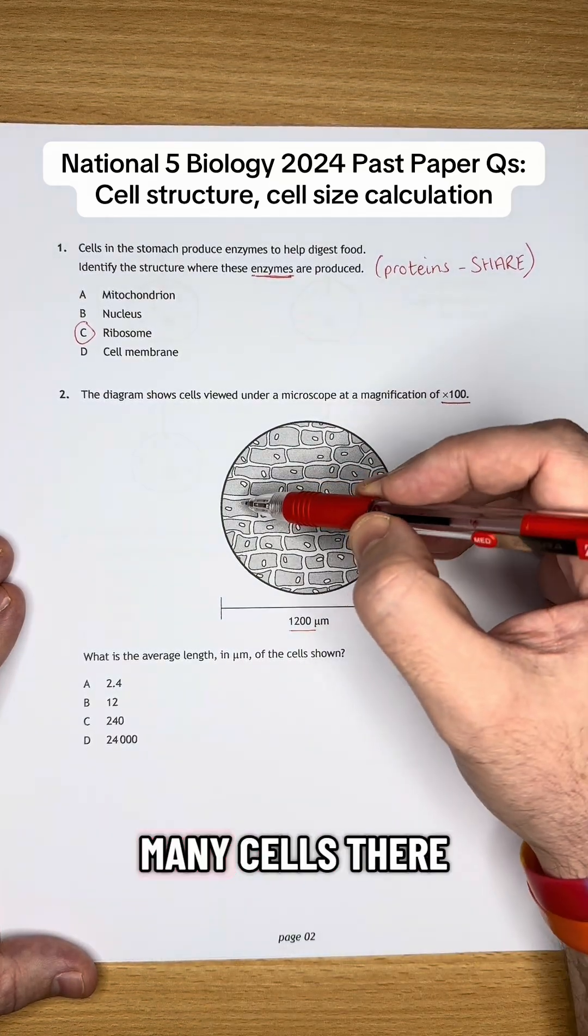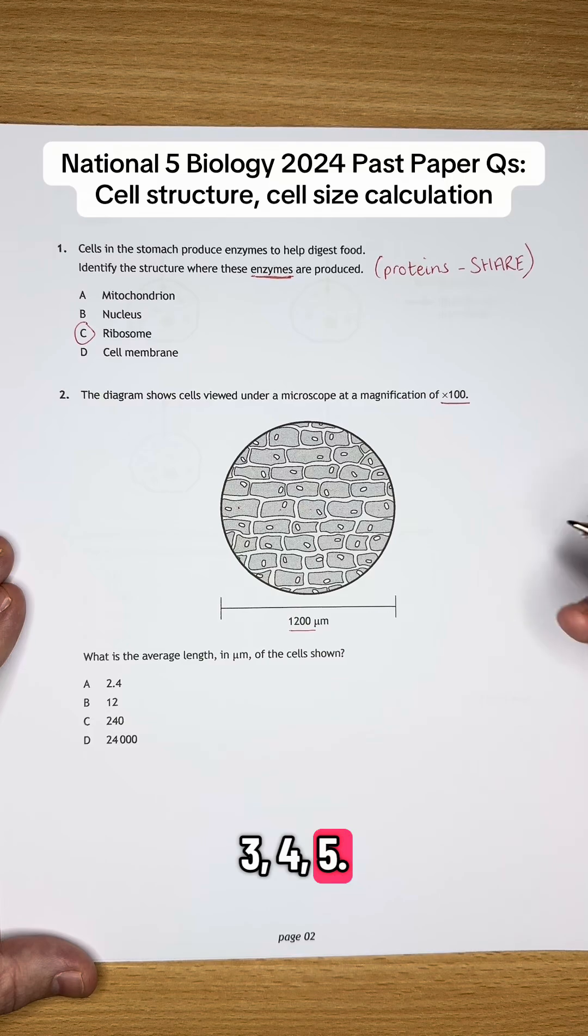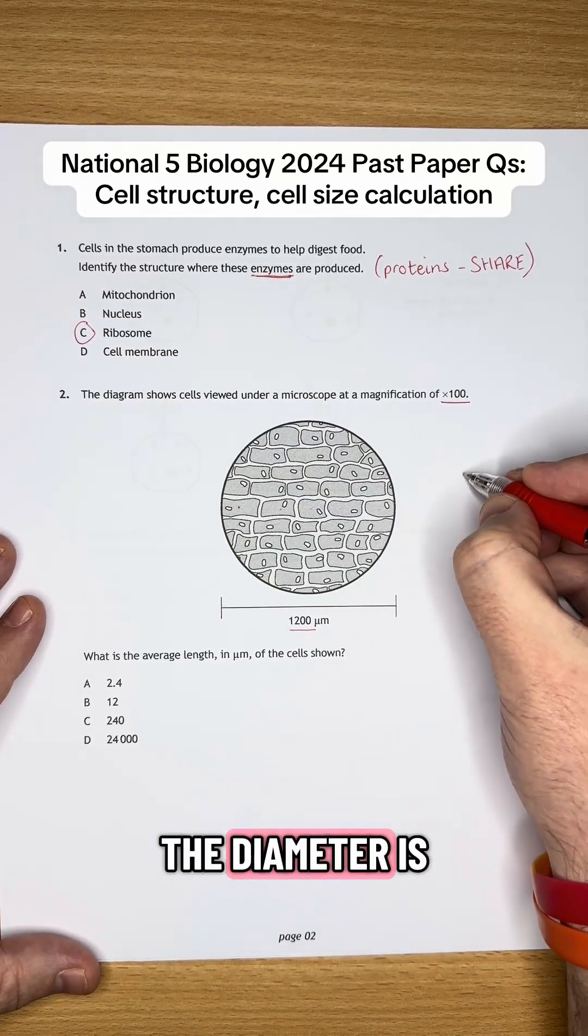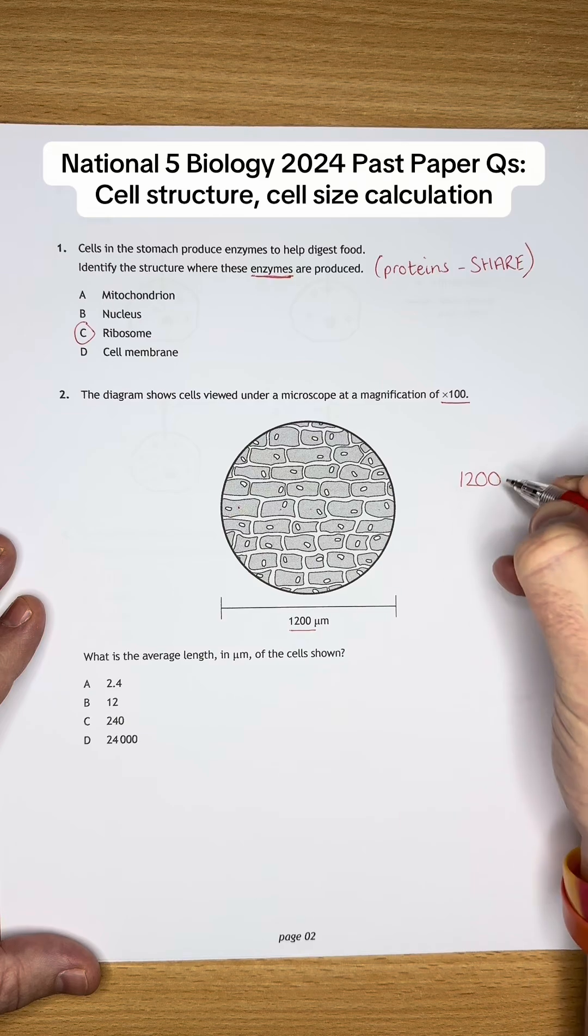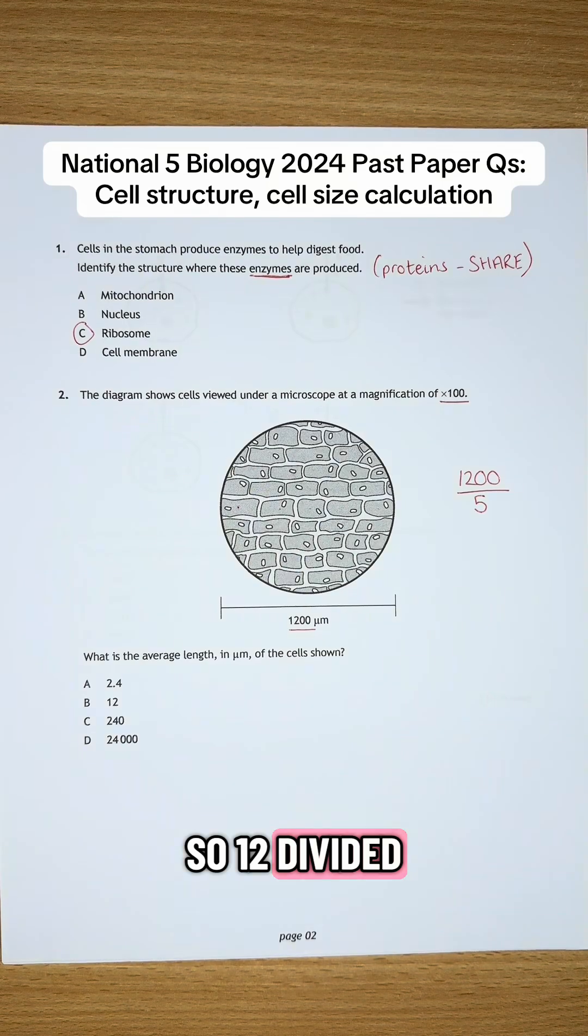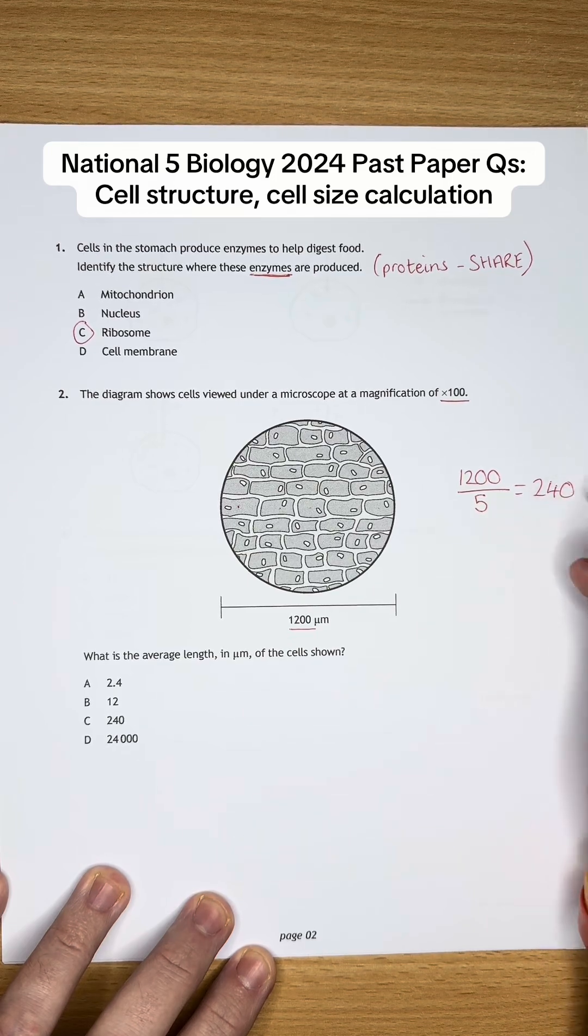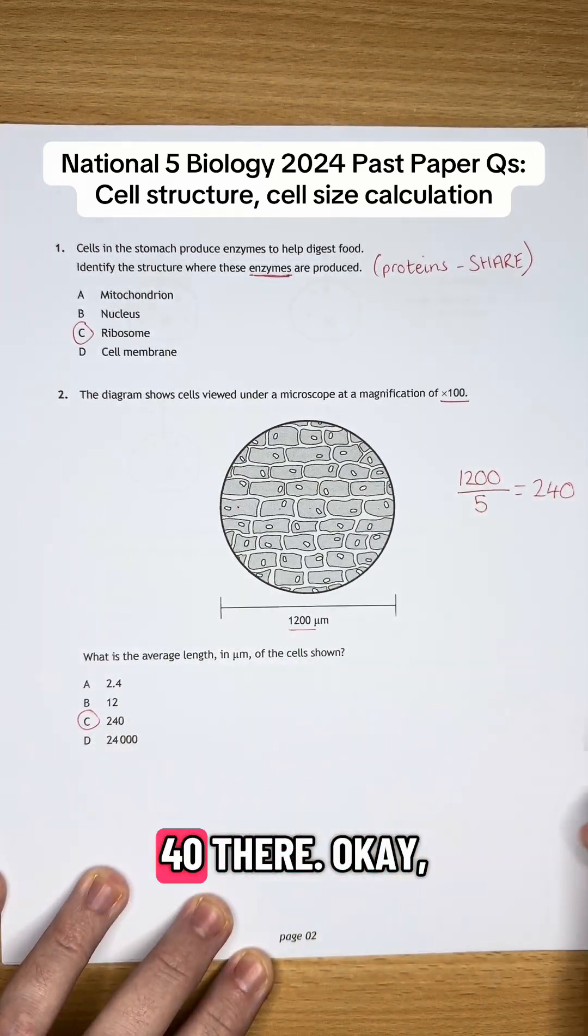Let's count how many cells there are across here. So we've got 1, 2, 3, 4, 5. The diameter is 1200. The number of cells across is 5. So 1200 divided by 5 is going to make 240. So we're looking for 240 there.